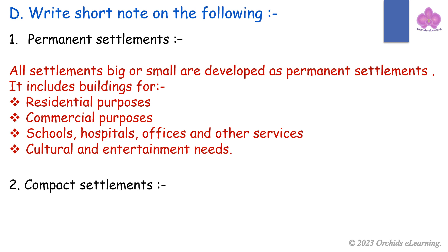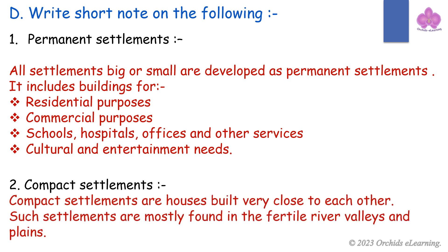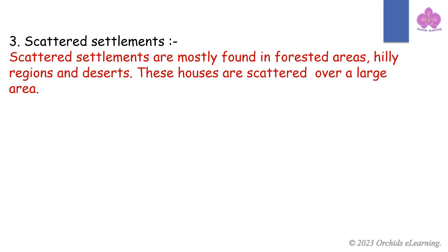Compact settlements: Compact settlements are houses built very close to each other. Such settlements are mostly found in fertile river valleys and plains. Scattered settlements: Scattered settlements are mostly found in forested areas, hilly regions, and deserts. These houses are scattered over a large area.